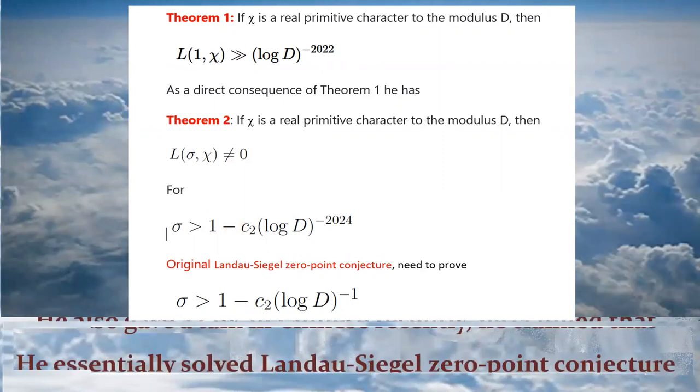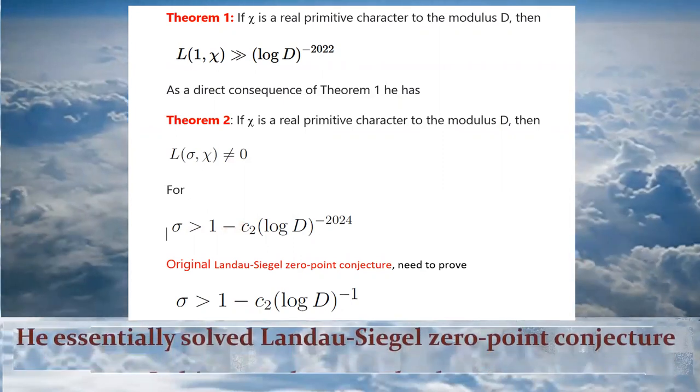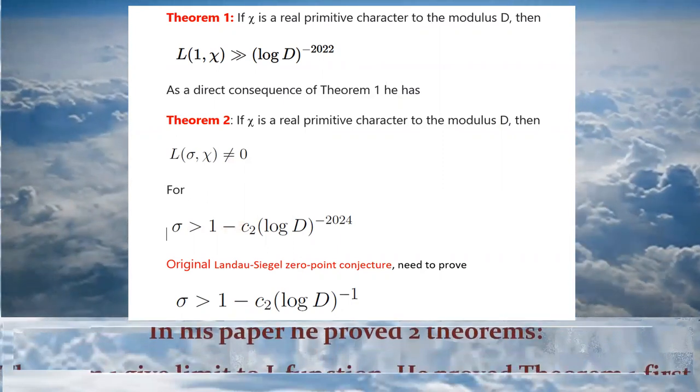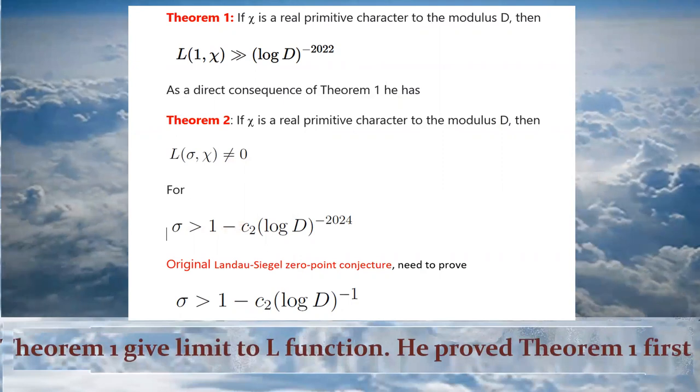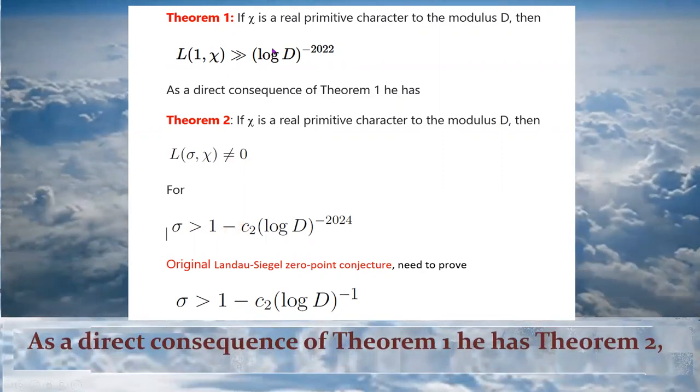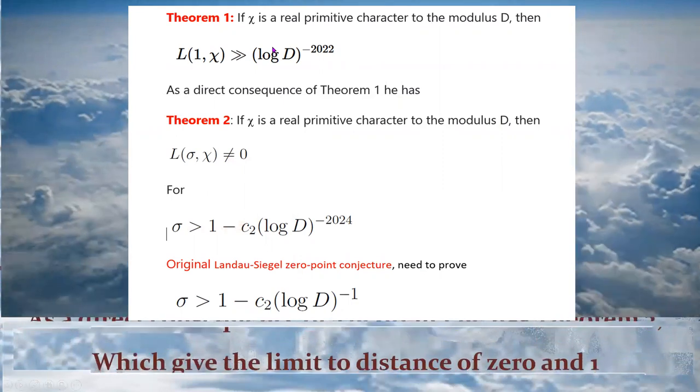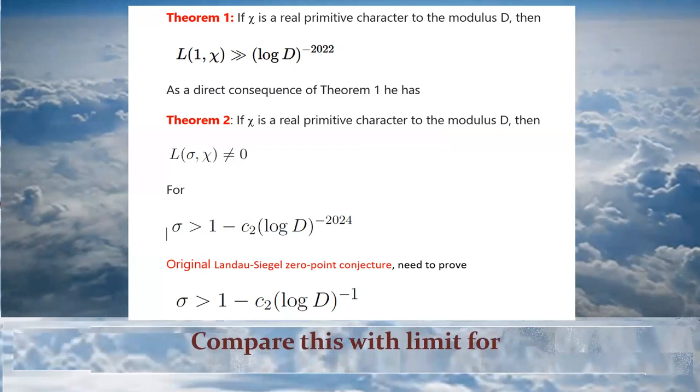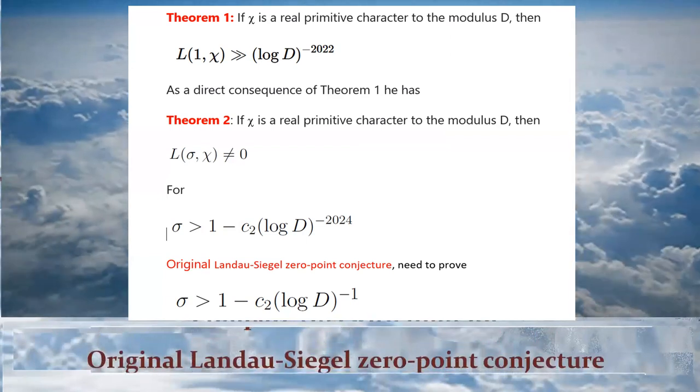In his paper he proved two theorems. Theorem 1 give limit to L function. He proved theorem 1 first. As a direct consequence of theorem 1 he has theorem 2, which give the limit to distance of zero and 1. Compare this with limit 4. Original Landau-Siegel zero point conjecture. 2024 versus 1.